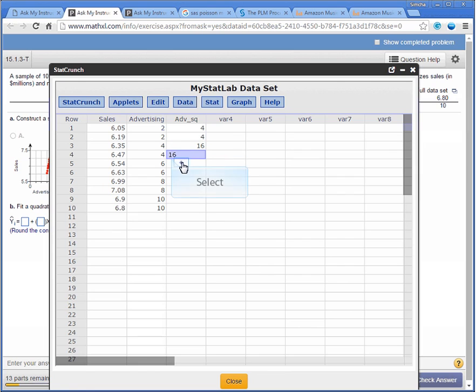4 squared is 16, 16, 6 squared is 36, 36, 8 squared is 64, 64, and 10 squared is 100.